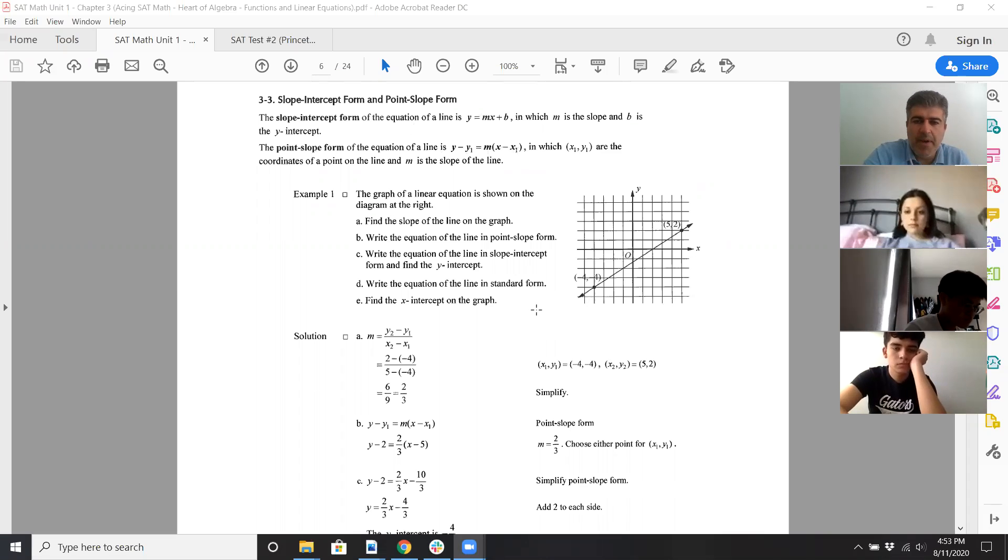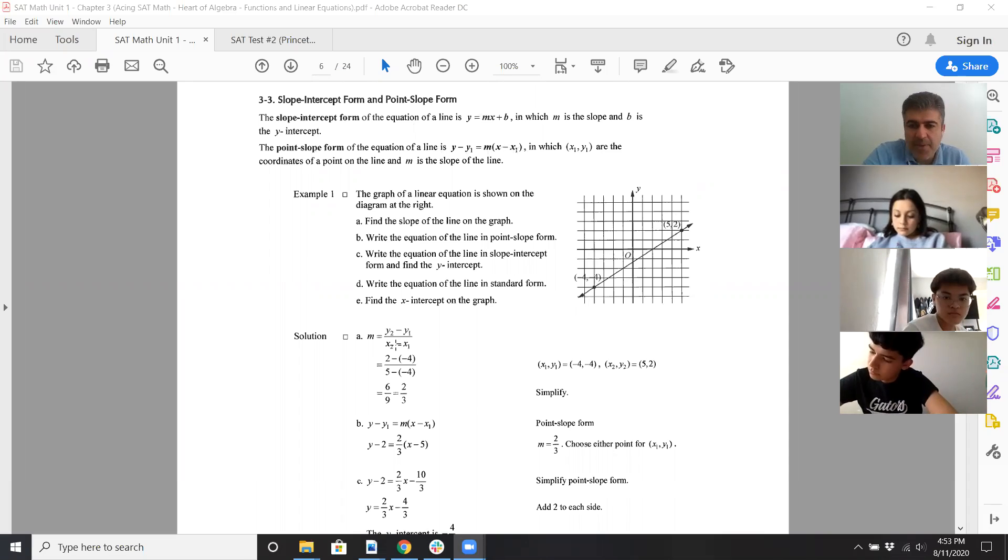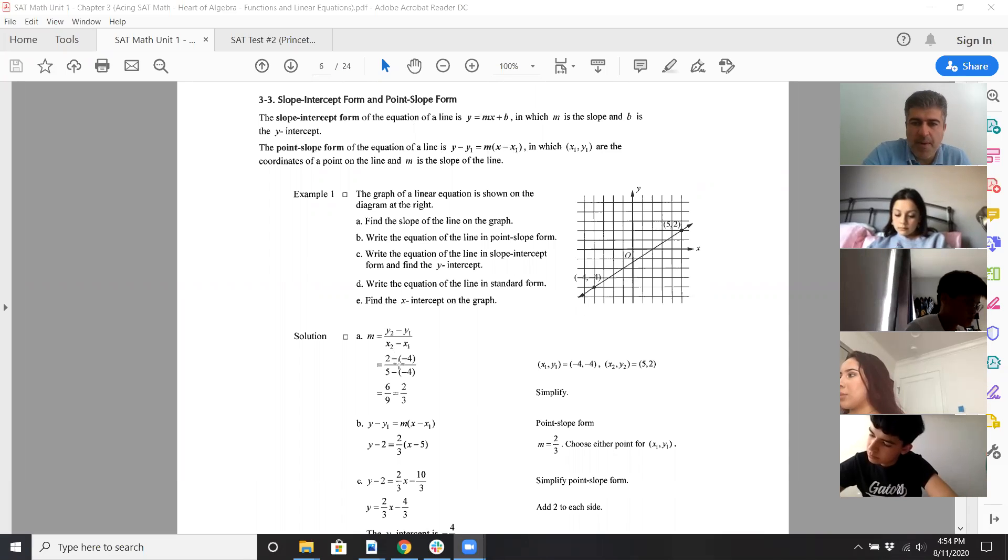So look at example one, find the slope, it's pretty easy. Take difference in the y values, difference in the x values, 2 minus negative 4 or 5 minus negative 4, easy. And if you want to write that in point-slope form, use two-thirds of your slope and use either 5, 2 or negative 4, negative 4, your choice for x1, y1.